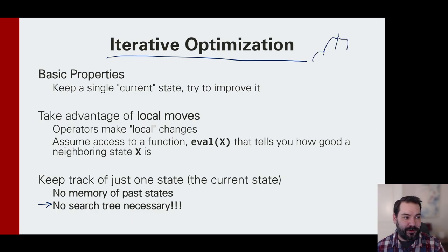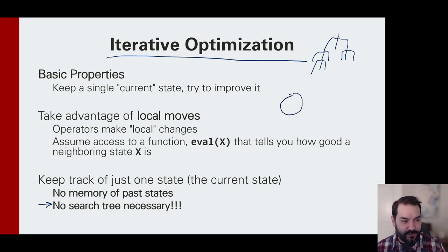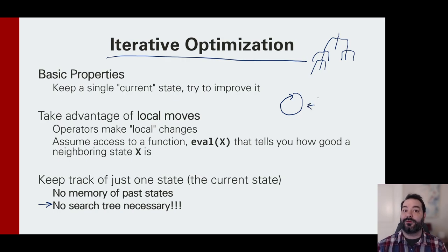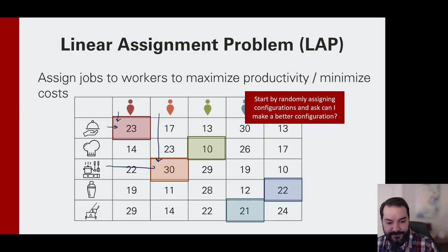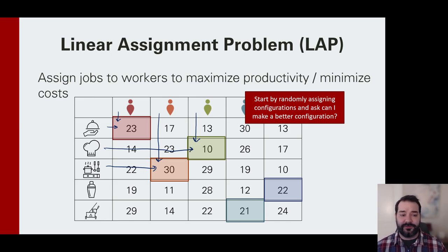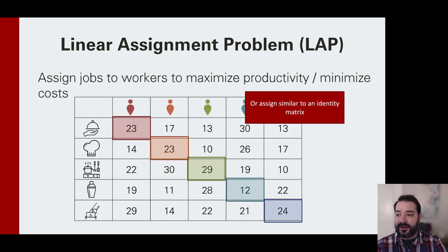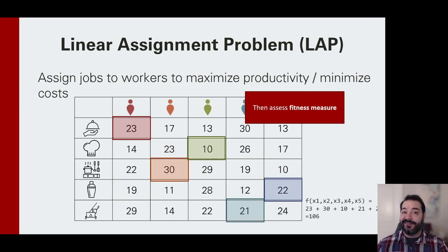I don't need to explore all possible routes and decide which is the best next route to consider. Instead of a search tree, it's much more a simple loop. I just iterate through my search — at each cycle I say, let's refine our search this loop around. When dealing with the linear assignment problem, what you could do is randomly assign people to tasks: red is the server, orange is the sous chef, green is the head chef. We start with some configuration and iterate from it.